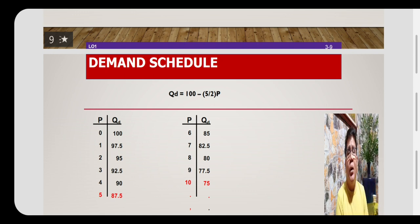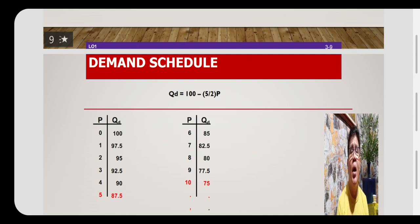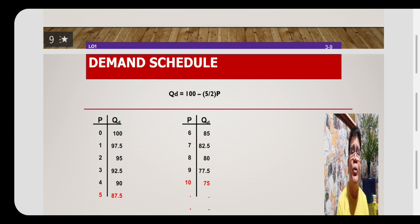If we increase price by 1 peso each time, the quantity demanded will change by the amount of the slope. The slope is 5 over 2, which is 2.5. So for every 1 peso increase in price, the quantity demanded will decrease by 2.5 units. If originally the quantity is 100 when price is 0, then when price increases to 1 peso, quantity demanded becomes 97.5 — a decrease of 2.5.